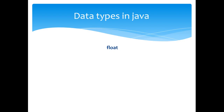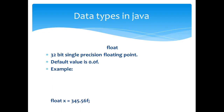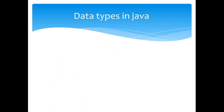The next type is the float type. It is a 32-bit single precision floating point value. The default value is 0.0f. An example of float x is shown here.